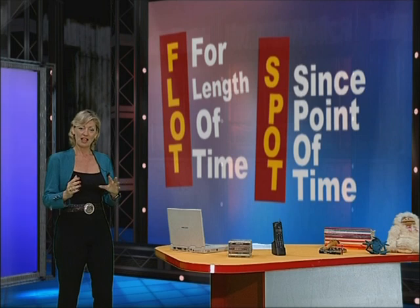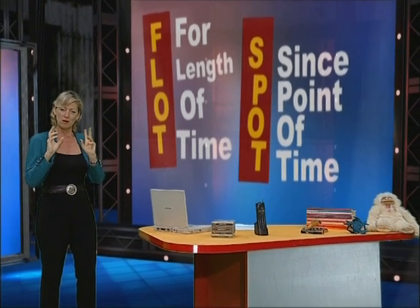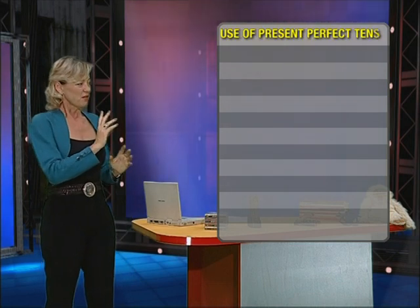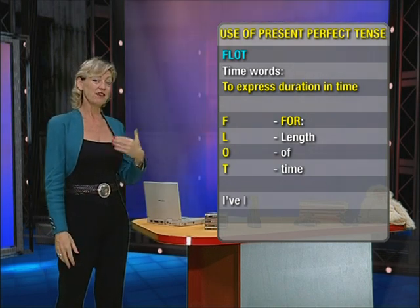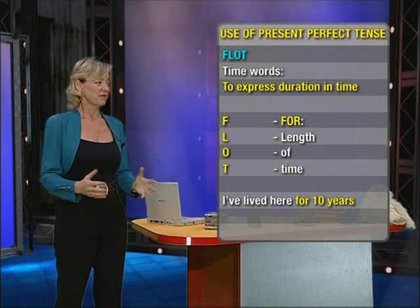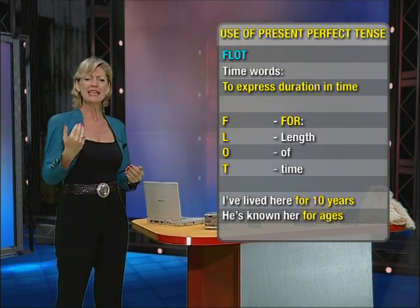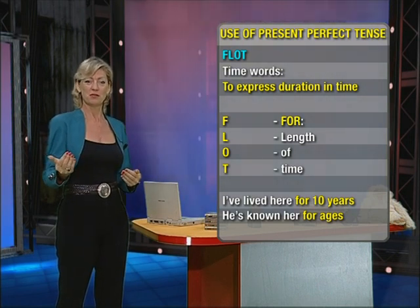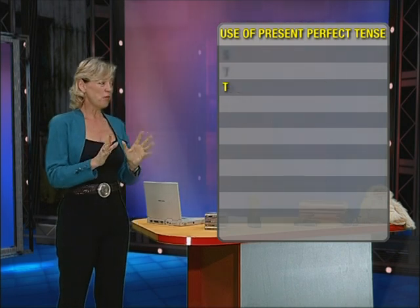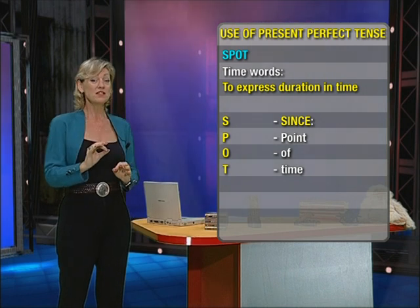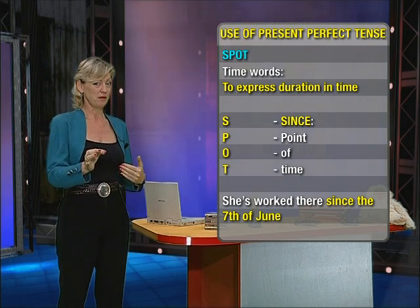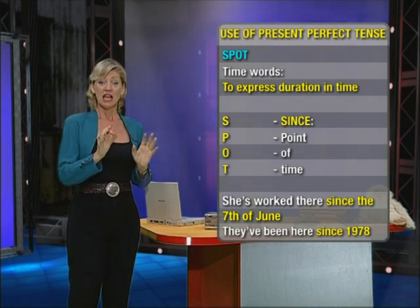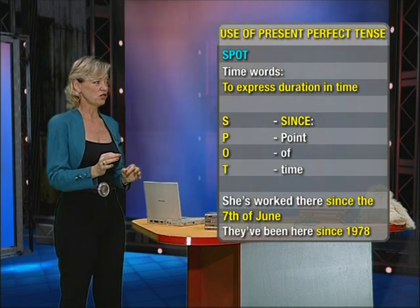Let's go to the screen now and I'll show them to you in written form so you can memorize them. FLOT: for a length of time — to express duration. Examples: I've lived here for ten years. He's known her for ages, meaning for a long time. SPOT: since — for a point of time. Examples: She's worked there since the 7th of June. And they've been here since 1978.